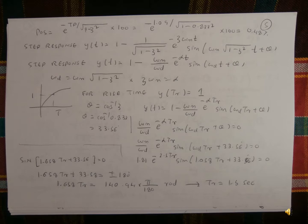We can continue to resolve the problem. The BOS is equal to e to the power of minus z·π divided by square root of 1 minus z squared, multiplied by 100. Substituting values: e to the power of minus 1 times 0.9 divided by square root of 1 minus 0.833 squared, multiplied by 100 — that gives approximately 0.488.